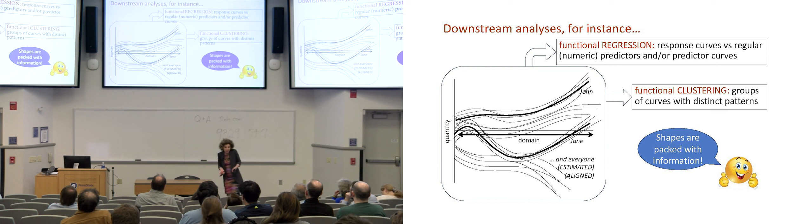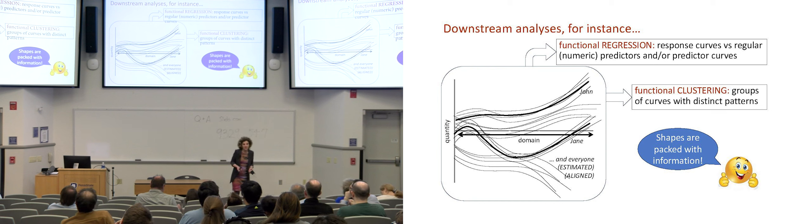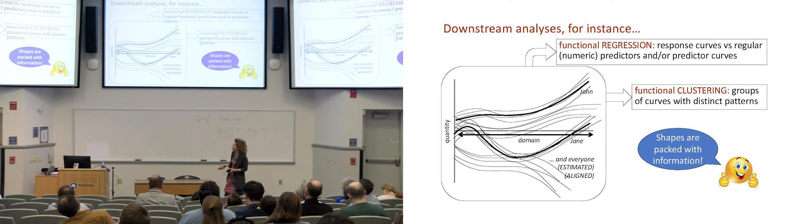And the answer to what do we do with it is just about anything you want. The functional data analysis toolkit, in fact, has functional versions of most of the statistical methods that you know already, that you're familiar with. So there are many, many things that you can do with them. And today I'm focusing on two. One is regression and the other one is clustering.